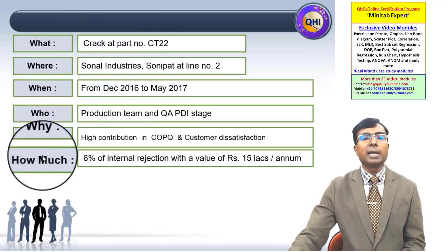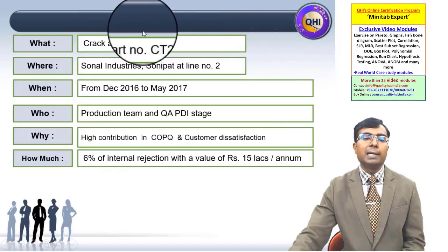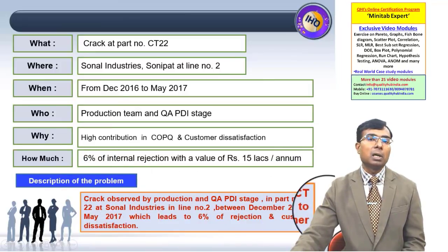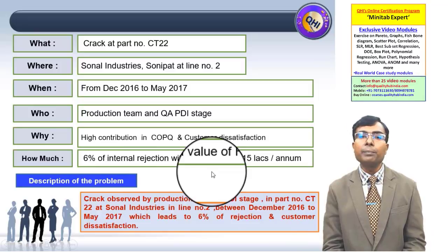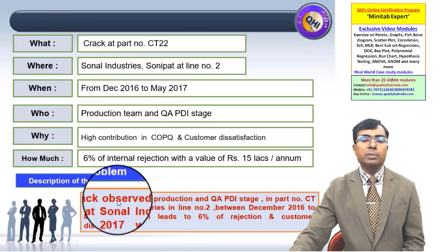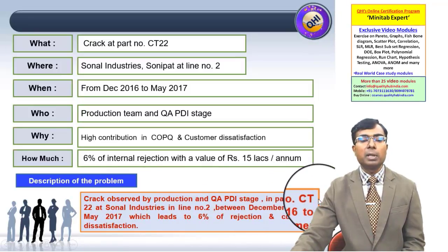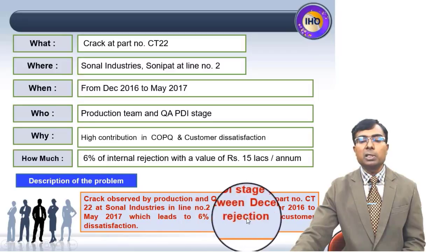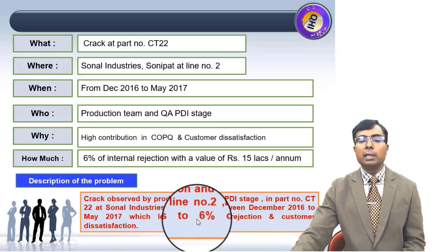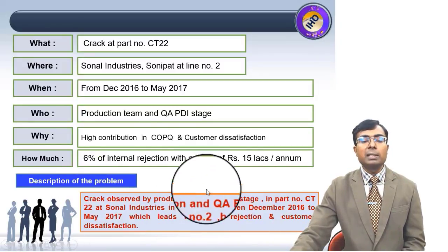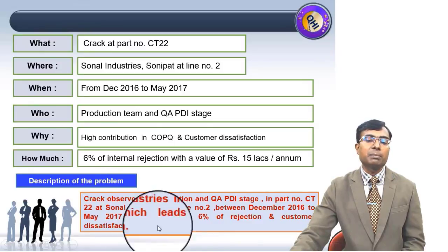Now, using all these elements, we need to formally phrase the complete problem statement. This statement will be used in the project charter for Six Sigma or other methodologies wherever we are defining the problem. The perfect problem statement reads: 'Crack observed by production and QA at PDI stage in part number CT22 at Sonal Industries, Line Number 2, between December 2016 and May 2017, which leads to 6% internal rejection and customer dissatisfaction.' The monetary value of rupees 15 lakhs per annum could also be added to make it complete.